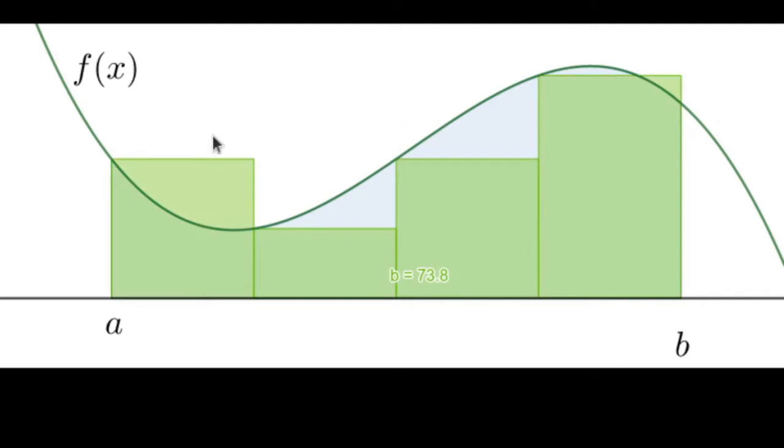So let's try to estimate the area by building some rectangles. Let's divide this segment from a to b up into a number of pieces. Here we've divided it up into four pieces.